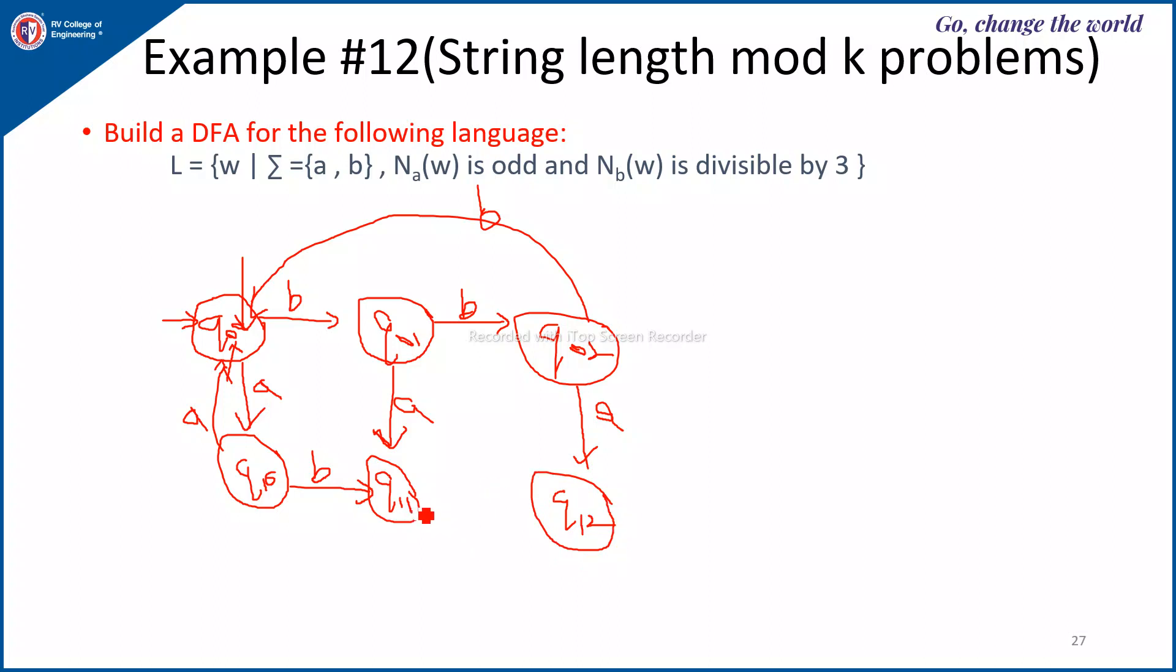Next for Q1, 1, if you encounter B, the count of the second will change from 1 to 2 on B. If you encounter A, it should go back to the state Q0, 1. Now from Q1, 2, if you encounter one more A, it should go back to the state Q0, 2 here on A.